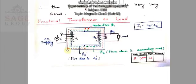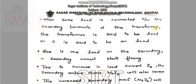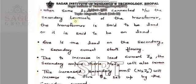So from here, you can easily understand that this I1 mainly supply two current for this transformer. First one is core current and second one is the current for this secondary terminal. That's why we can write here I1 equals to I0 plus I2 dash. When some load is connected between the secondary terminal of the transformer, the transformer is said to be loaded or it is said to be on load.